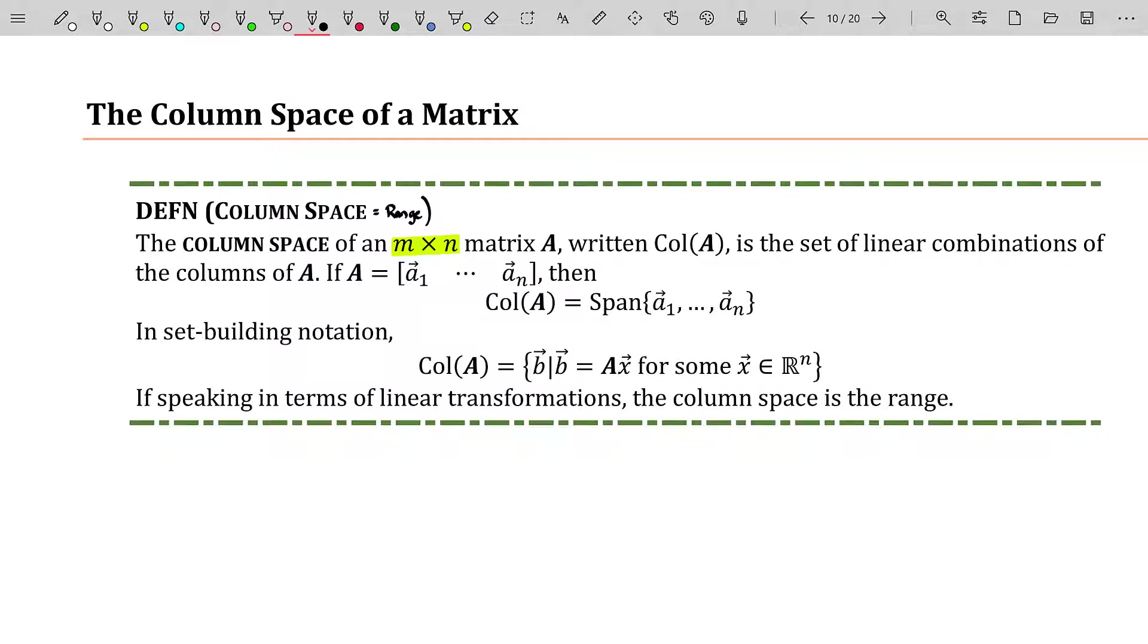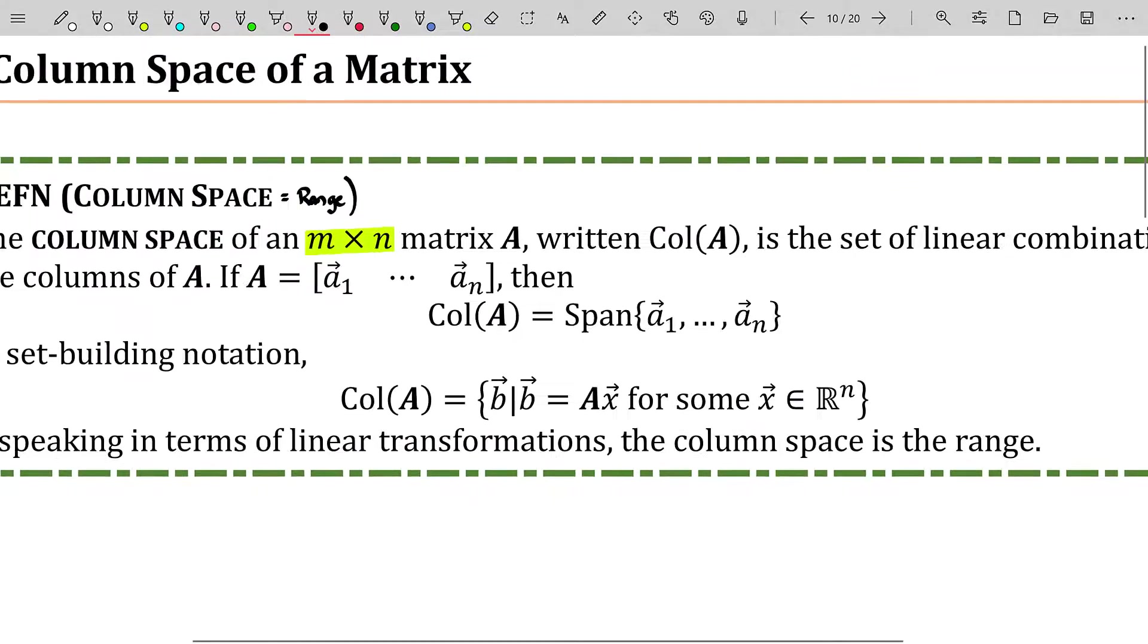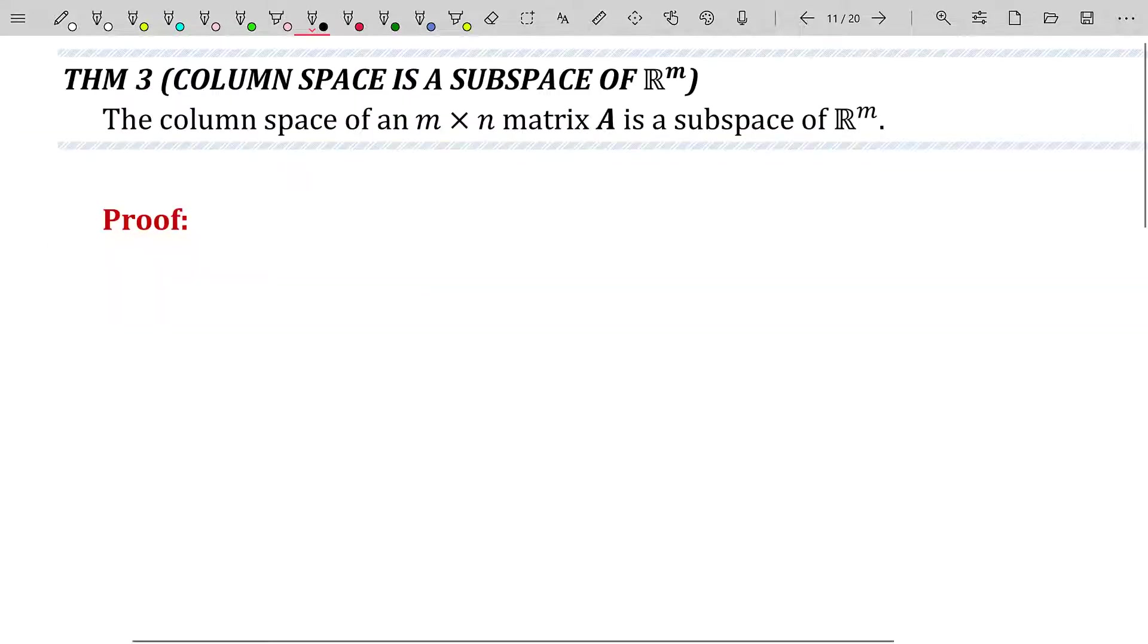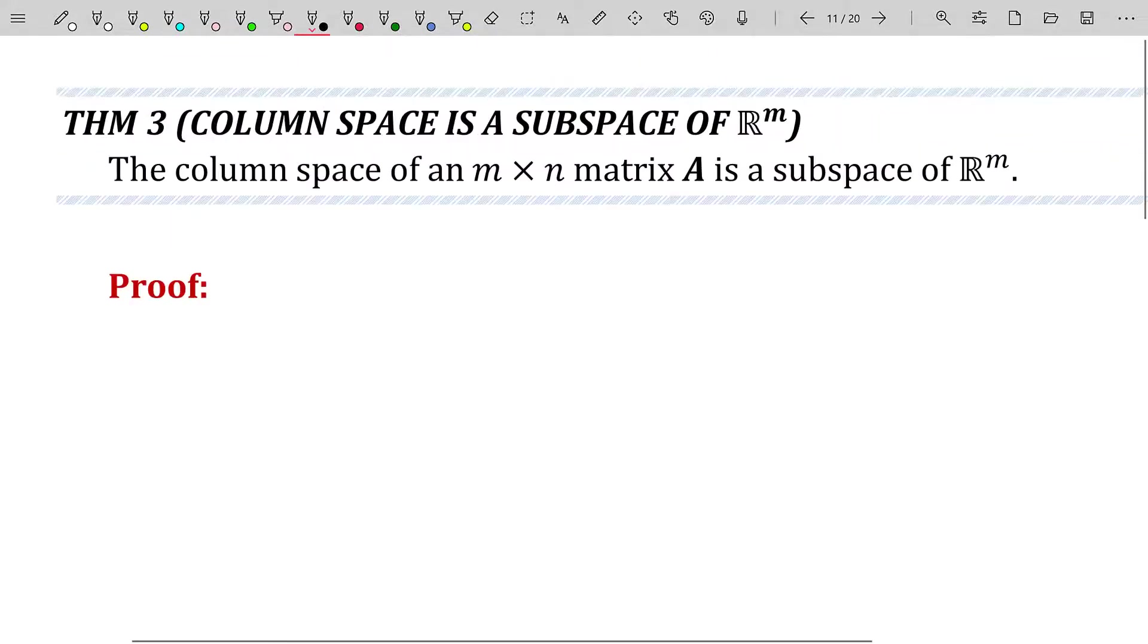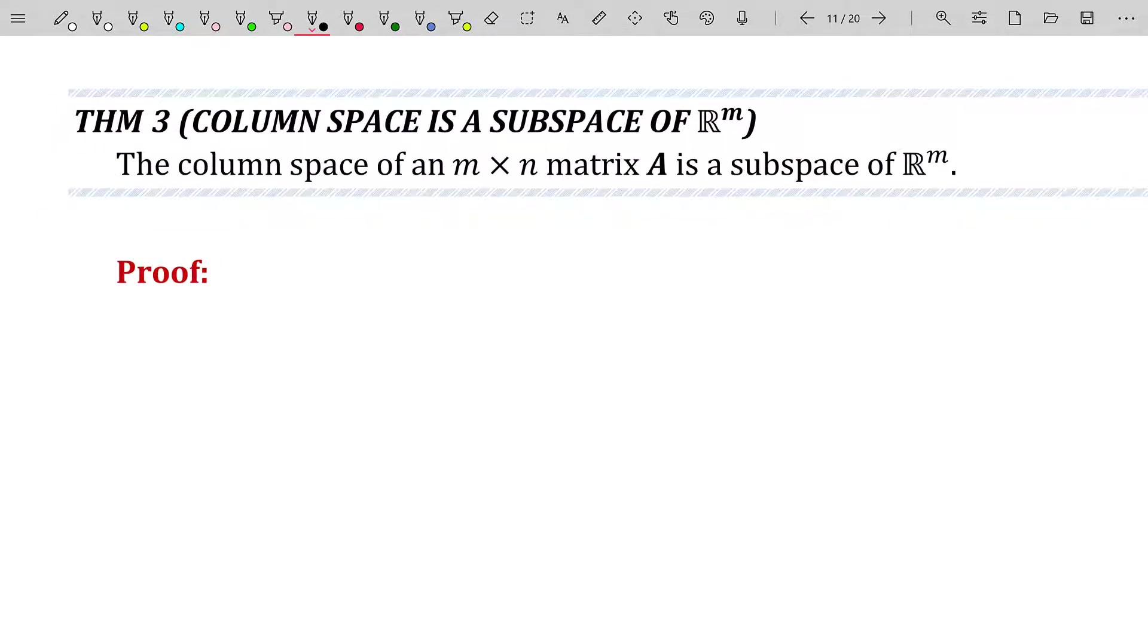But if we're not dealing with transformations, then to say range doesn't make sense. However, we do know that matrix vector multiplications are actually linear transformations. So in essence, column space is the range of your linear transformation Ax. Now we have defined two sets: the null space, which is the set of all solutions to Ax equals zero, and the column space, the set of all vectors b such that Ax equals b for any x in ℝⁿ.